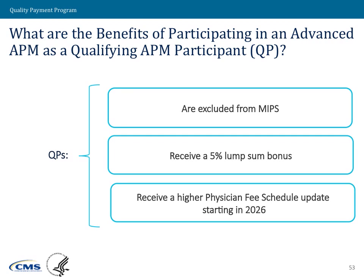Instead, QPs will receive a 5% lump sum bonus based on their Part B professional service payments. That is limited in time — the first lump sum payment will go out in 2019 and the last one will go out in 2024. After that, the long-term incentive for being in an advanced APM is in the fee schedule. QPs will receive a higher fee schedule update starting in 2026, and that compounds upon itself, so QPs will get a higher and higher fee schedule rate relative to non-QPs over time. Every year that someone participates in an advanced APM, they'll have an opportunity to receive this higher fee schedule update.